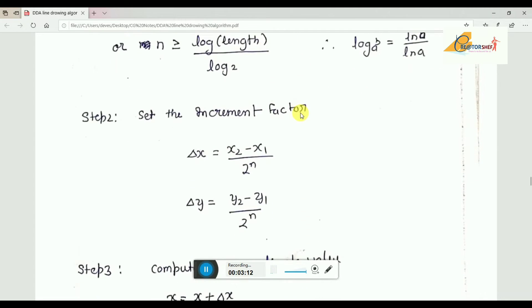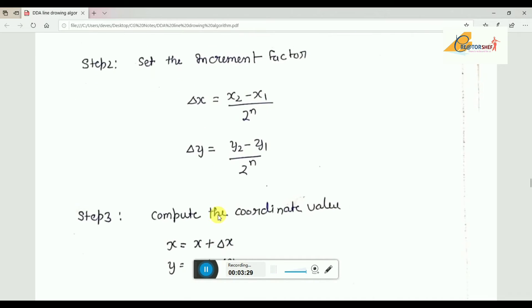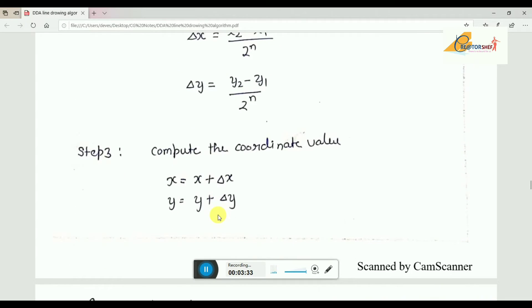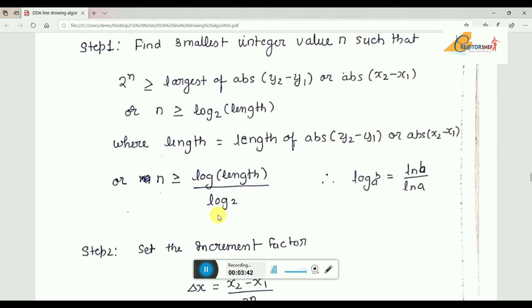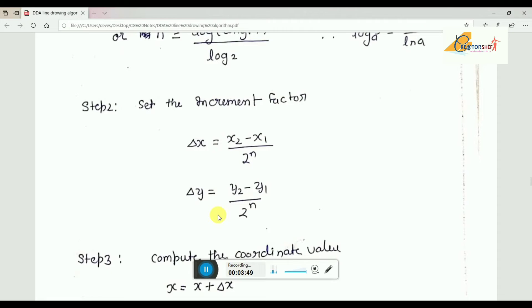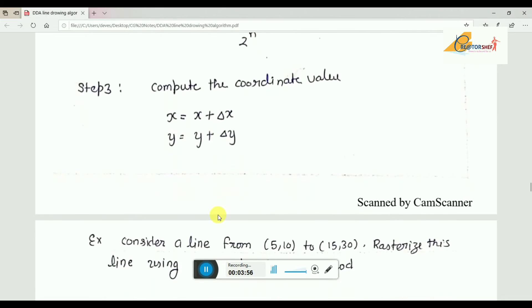Then we decide how much increase we have to make. On the basis of the value of n, we decide how much increase in both directions. It is a simple three step process. First, find out the value of n. Second, using that smallest integer, compute the increment factor: how much to increase in x direction or y direction. Third, compute the coordinate values. Let us try to understand with the help of an example.